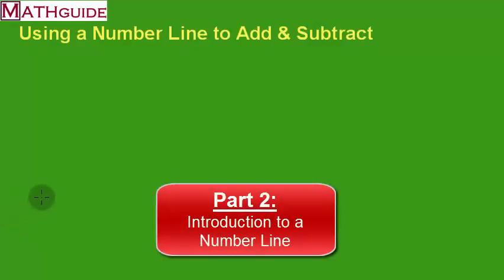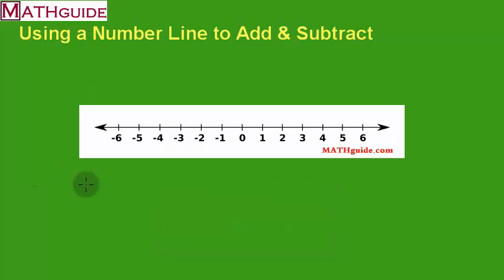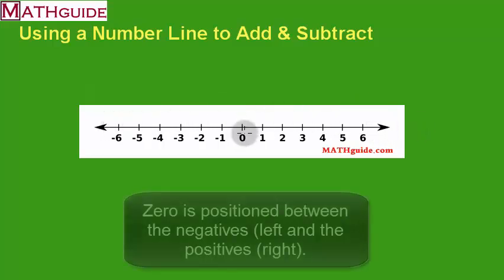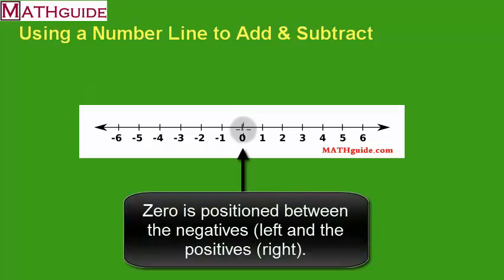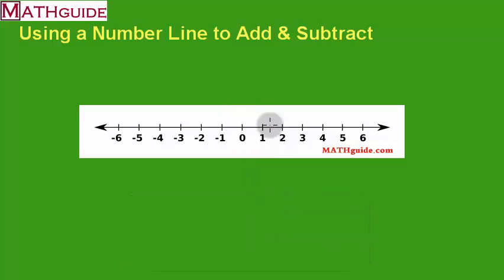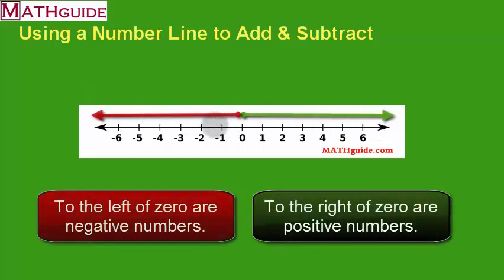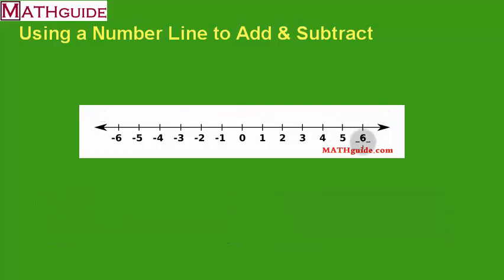In this part, we're going to talk about what a number line is. We have a line that goes on forever in both directions, which is why there are double arrows. Zero is smack dab in what we think of as the middle of the number line. To the right of zero we have positive numbers; to the left of zero we have negative numbers. As we move to the right, the numbers get bigger and bigger — one, two, three — we're getting larger as we go to the right.